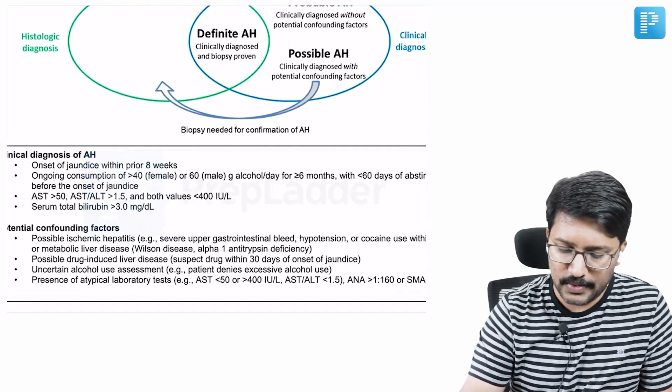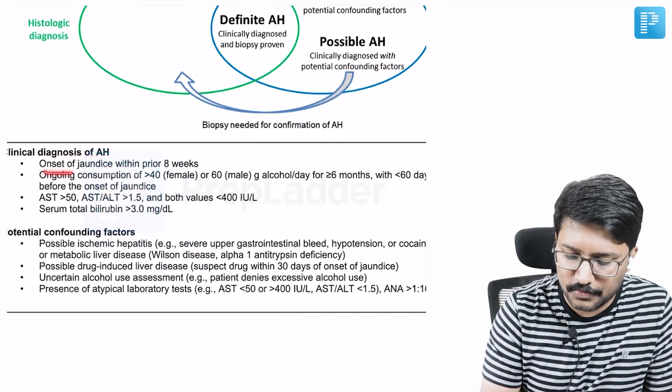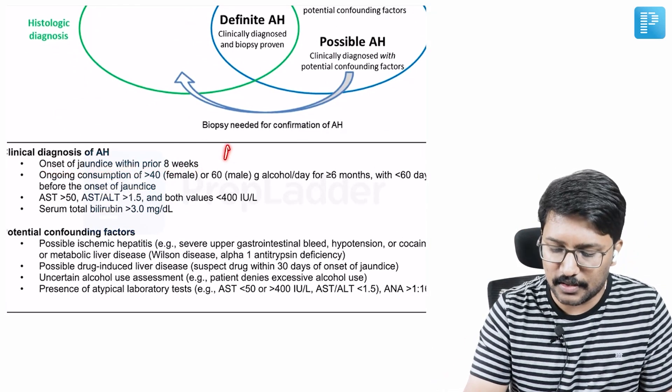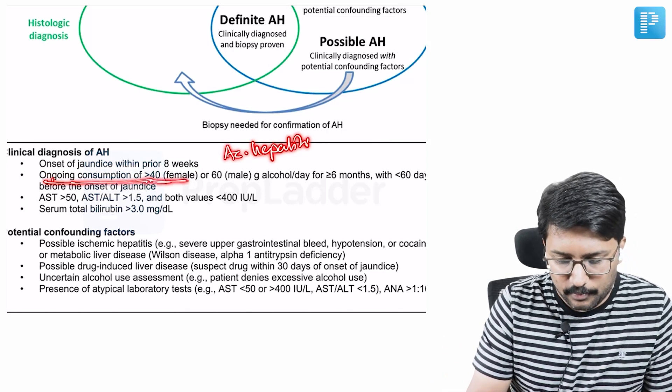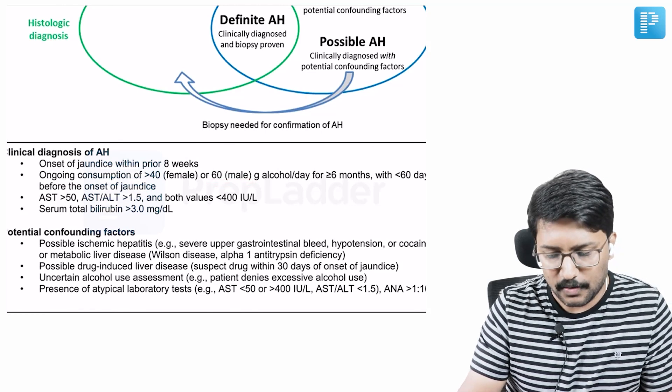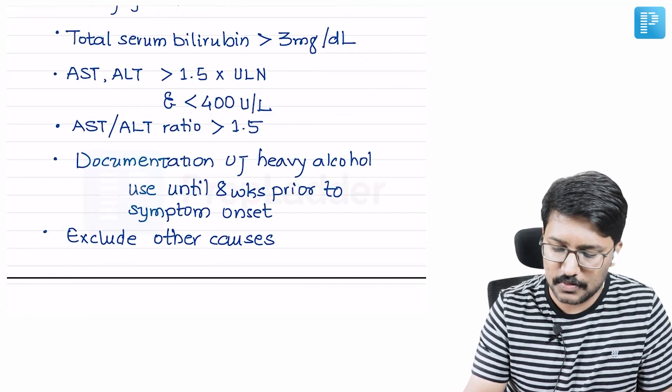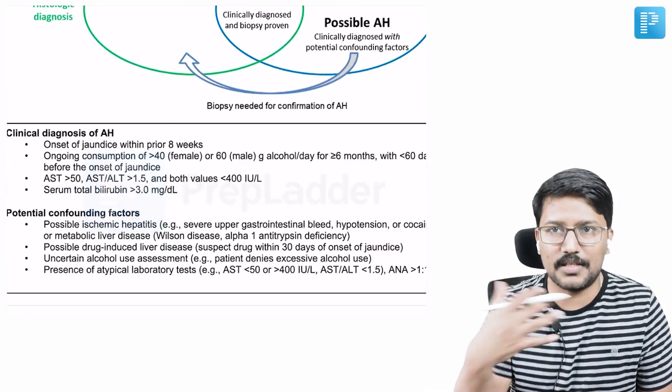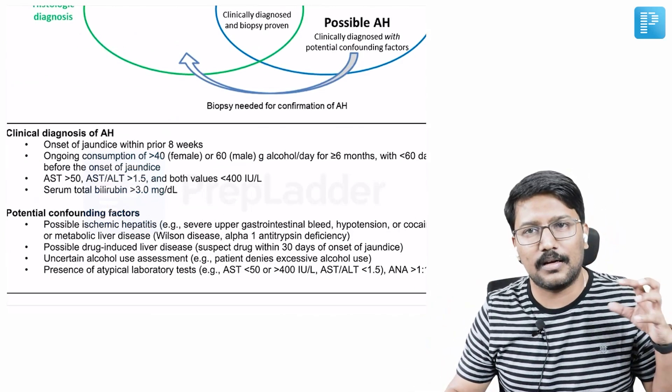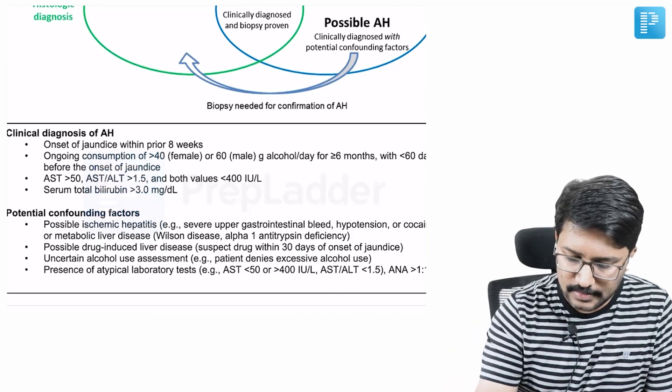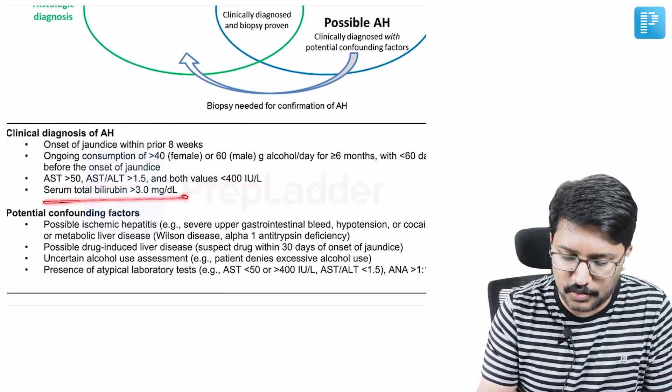Now, before we move on, just a quick recap of the clinical diagnosis criteria from this 2016 consensus statement. That says onset of jaundice within prior 8 weeks - that is basically to say that it is an acute hepatitis. Then ongoing consumption of alcohol more than 40 grams per day for female or more than 60 grams per day for male for more than 6 months. And abstinence - here it is mentioned as less than 60 days. In the ACG criteria, it was 8 weeks. Just remember that there should be a temporal relation between the alcohol consumption and symptom onset. A patient in long abstinence, then the acute hepatitis should be explained by alternative diagnosis. Then the rest of the things are same. AST and ALT elevated, AST/ALT ratio more than 1.5, both values less than 400, and serum bilirubin more than 3.